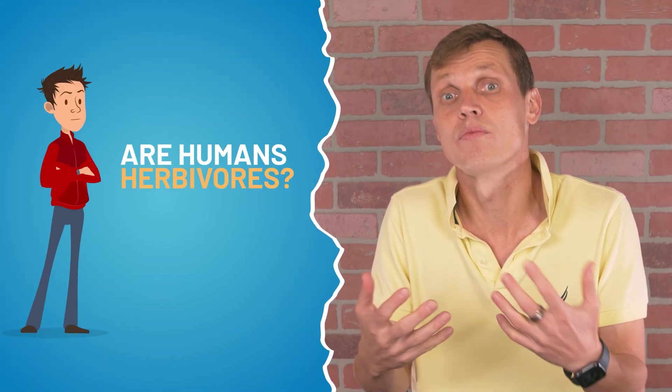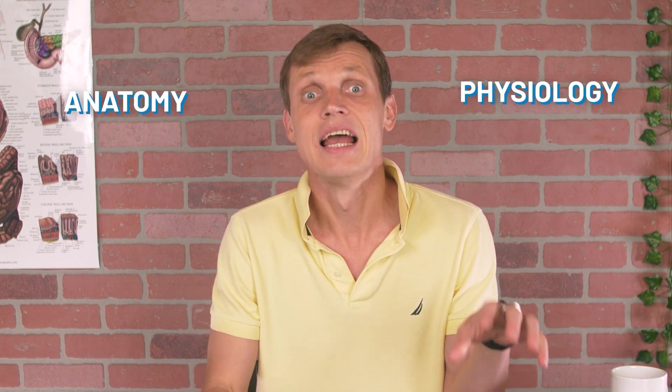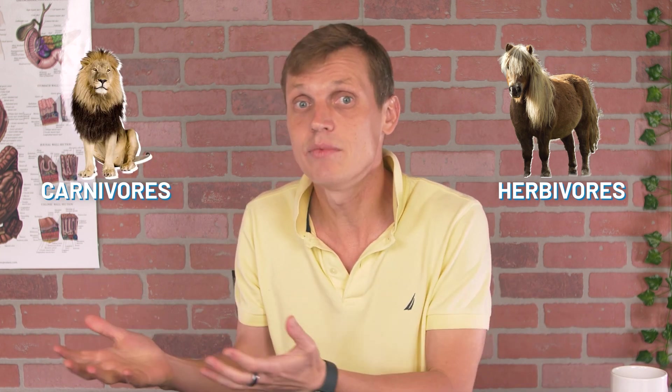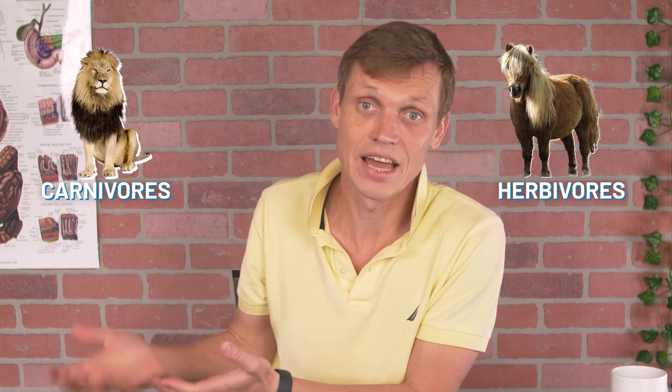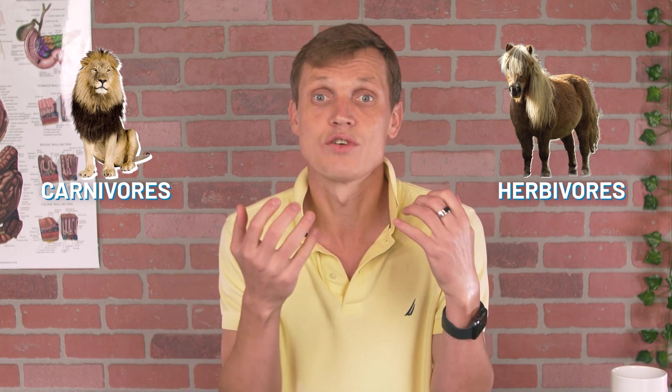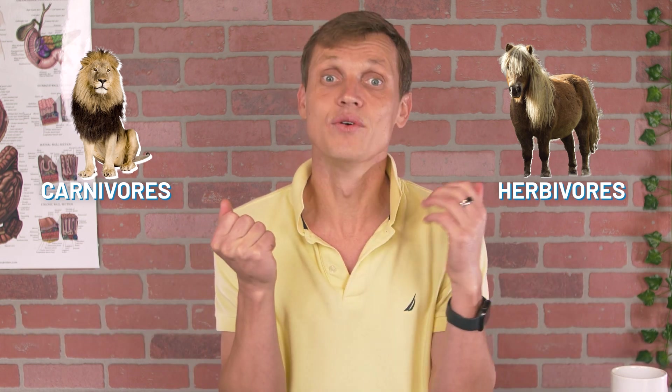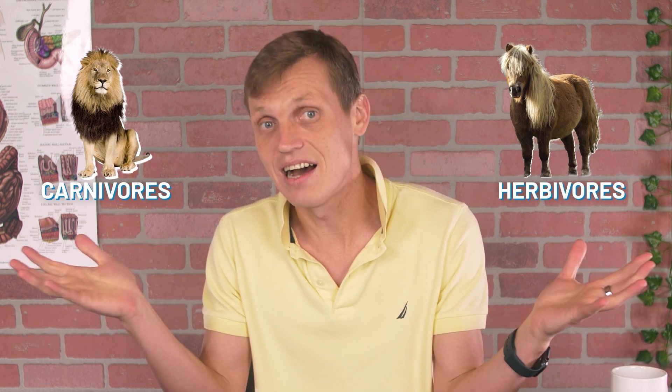The key argument of proponents of vegetarianism is that humans are herbivores and the vegetarian diet is a natural fit for us. So, let's spend a couple minutes talking about human physiology and anatomy and let's see if it's appropriate to categorize humans as herbivores. Or we're closer to carnivores, animals that get food from killing and eating other animals. Let's compare our digestive system to the ones of herbivores and carnivores. Are we closer to a cute pony or a ravenous lion?